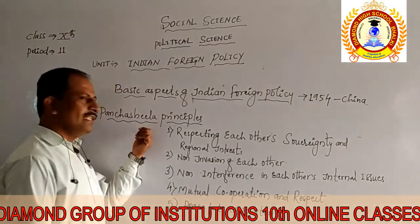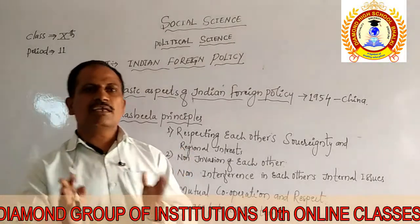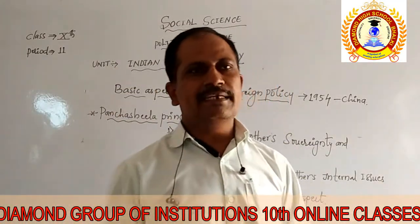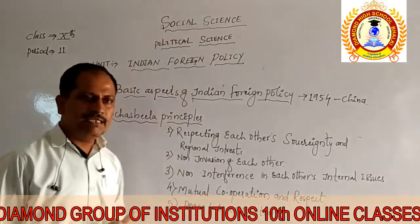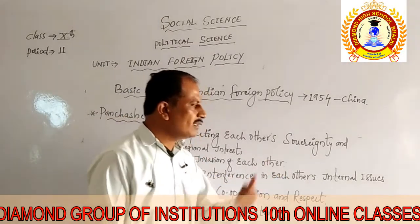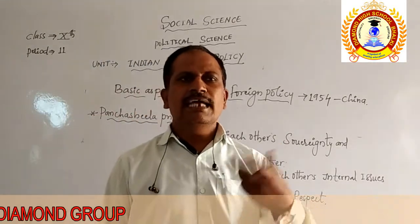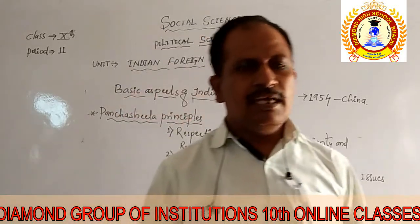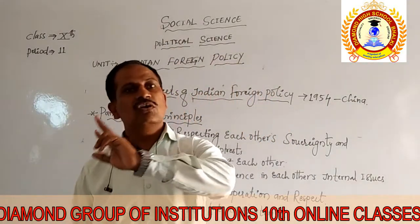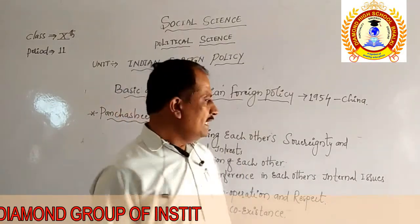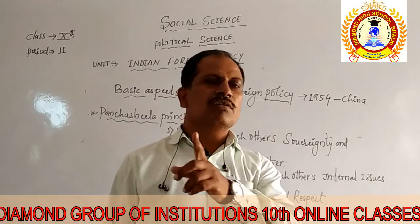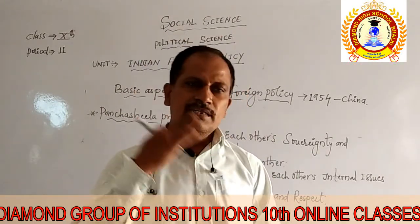The second Panchshila point is non-invasion of each other. India should not make any attack towards China and China should not make any attack towards India under any condition. The third point is non-interference in each other's international issues. If China maintains relations with Russia and India maintains relations with America, China should not make any issues toward India's internal or international matters, and India should not interfere in China's internal issues.